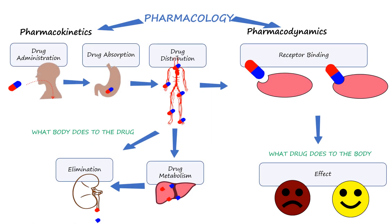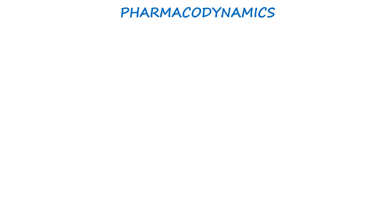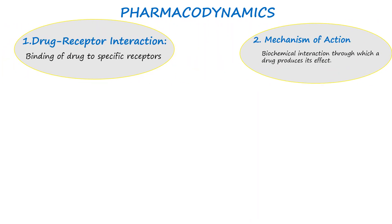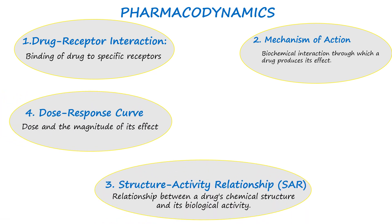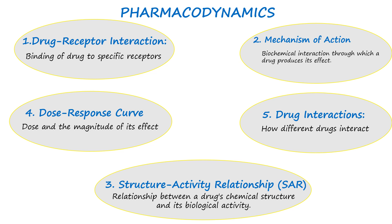Hello everyone and welcome back. In our previous video we looked into the pharmacokinetic principles, which included absorption, distribution, metabolism, and excretion of drugs. In this video we learn about pharmacodynamics, which is the study of how the drug affects the body. Pharmacodynamics involves several key concepts like drug-receptor interaction, mechanism of action, structural activity relationship, dose-response curve, and drug interaction. We will look into each one of them as we go on.